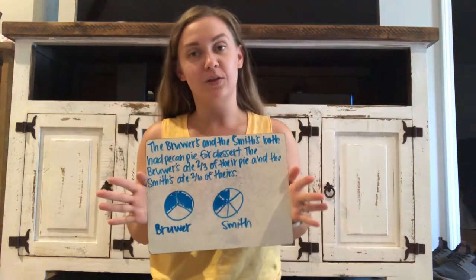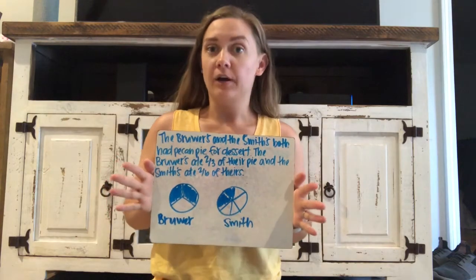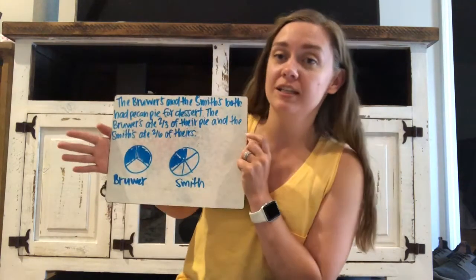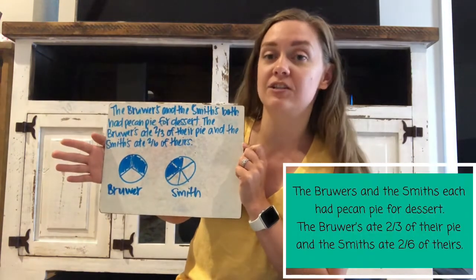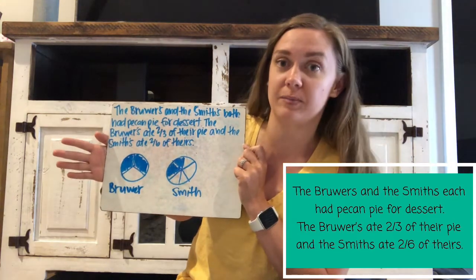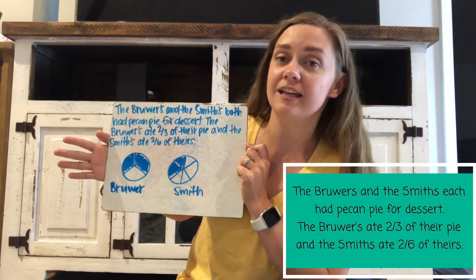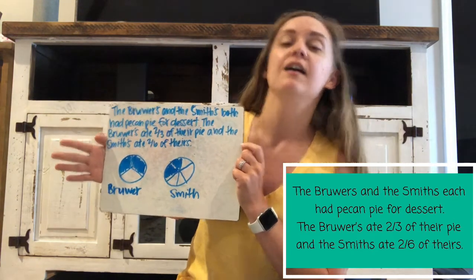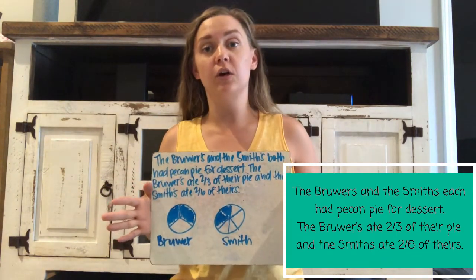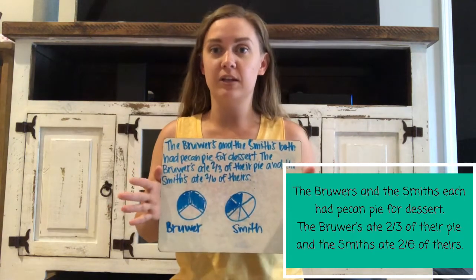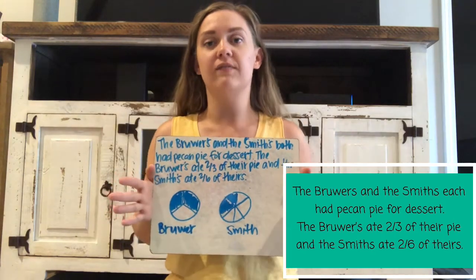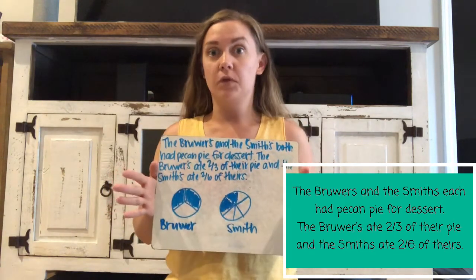The first situation we're going to look at is about pecan pie, because we all love pecan pie — it's delicious. This says that the Brewers and the Smiths are each eating pecan pie for dessert. The Brewers ate two-thirds of the pecan pie and the Smiths ate two-sixths of the pecan pie. We're going to think about who ate more, who ate less, and who's got more left over. The first thing I want to figure out is who ate more of the pie.